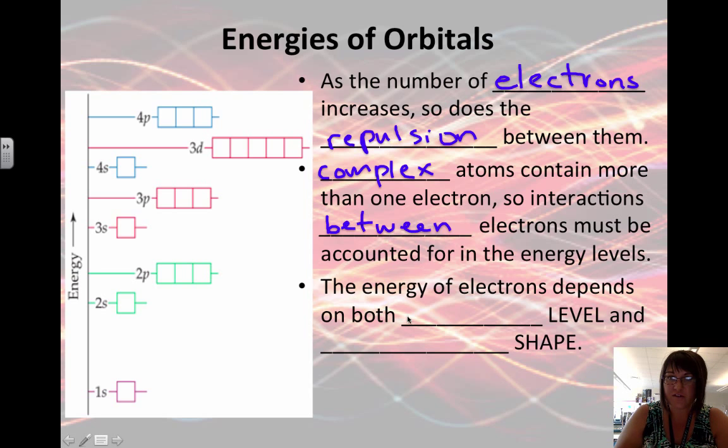The energy of electrons depends on both the energy level, or the distance from the nucleus, and the orbital shape. Some orbitals are more crowded than others.